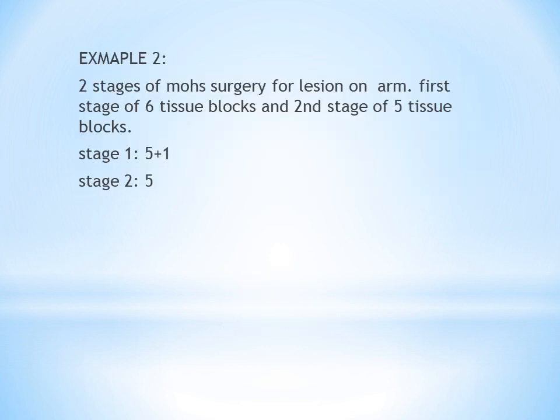Second example: 2 stages of Mohs surgery for a lesion on the arm. Stage 1 has 6 tissue blocks and stage 2 has 5 tissue blocks. Site is arm. Number of stages: 2. Tissue blocks: stage 1 has 6, which is more than 5 — note it as 5 plus 1, meaning 1 extra block. Stage 2 has 5 tissue blocks only.